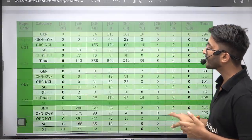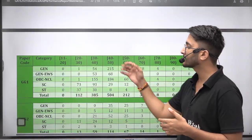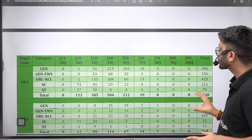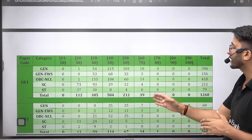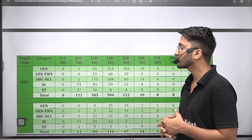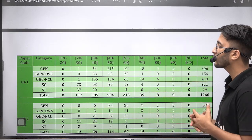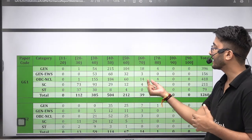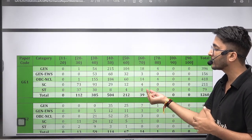Category-wise bifurcation is also there like how much category general, general EWS, OBC NCL, SC, ST. How many students are getting marks in different ranges. This data is very useful because as you know in PSUs or IITs, the number of seats are reserved category-wise, so you can get an idea.